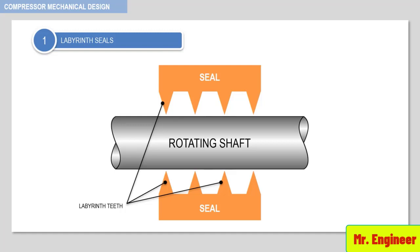They are also sharp so that friction generated by any accidental contact is very small. The space between the teeth forms a labyrinth passage. In our example, the process side — the gas to be sealed — is on this side, and the atmospheric side is located here.